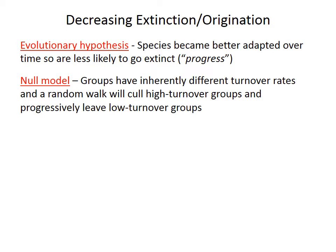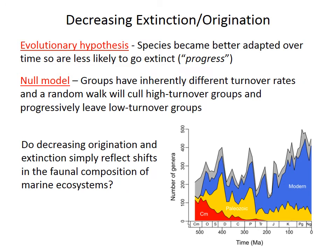However, it's possible to get similar decreases in extinction and origination with a null model — a null model just representing the expected outcomes from random fluctuations. Imagine two groups of species: one that has high turnover with high extinction and high origination, and the other group with low turnover. If both groups undergo random walks, the species in the high turnover group are more likely to randomly drift their way to extinction, which would leave mostly low turnover groups as time progresses. Marine ecosystems have definitely changed over time from the Cambrian fauna to the Paleozoic fauna to the modern fauna, and the question arises whether the decreases in extinction and origination are related to that turnover.